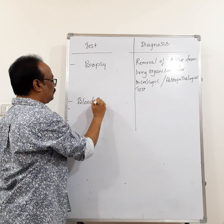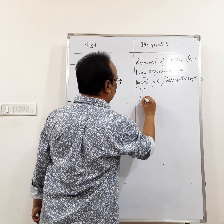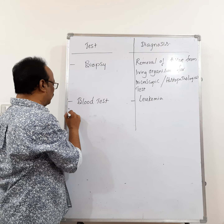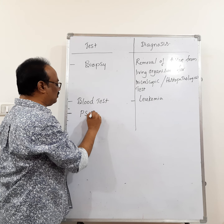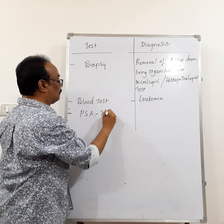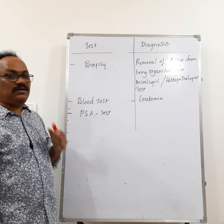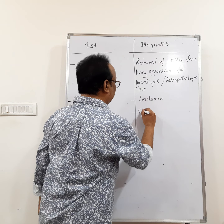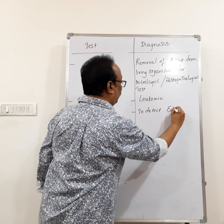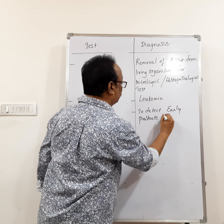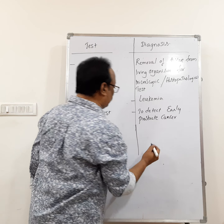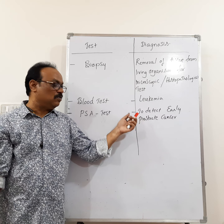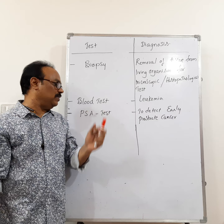The second diagnostic method is a blood test, which is done to detect leukemia. The third is the PSA (Prostate-Specific Antigen) test, used to detect early prostate cancer. The prostate gland is present only in male human beings, so prostate cancer is seen only in males.